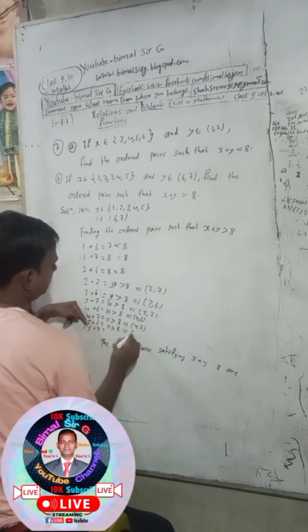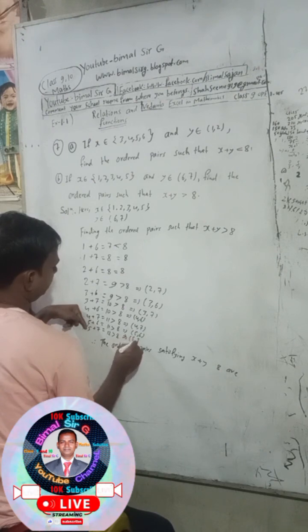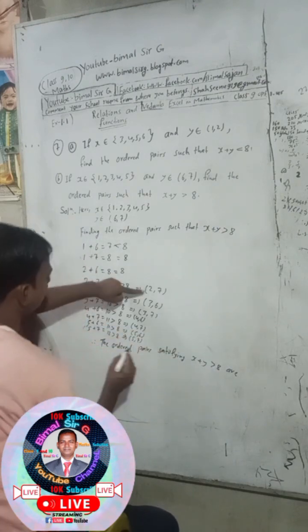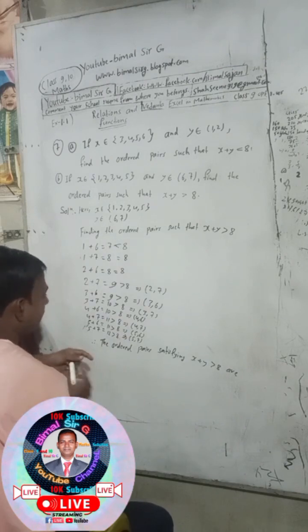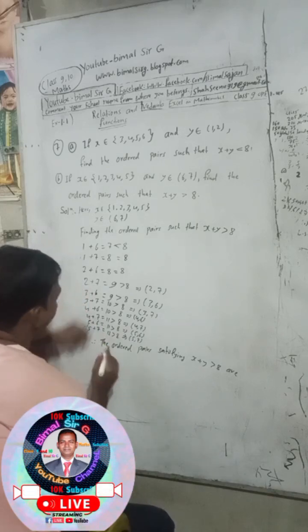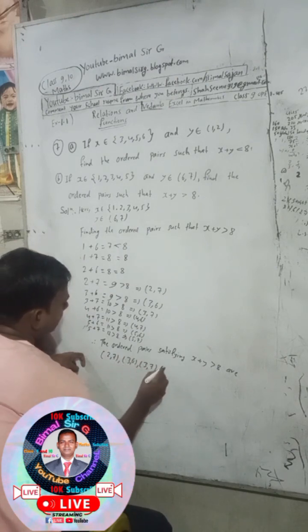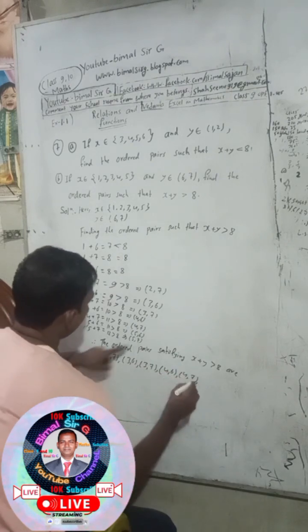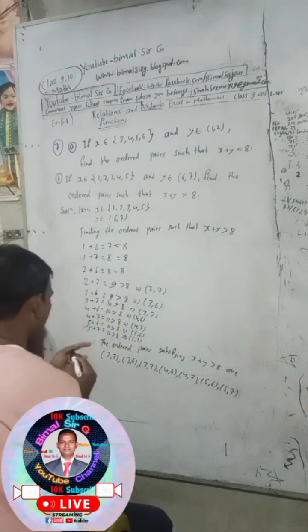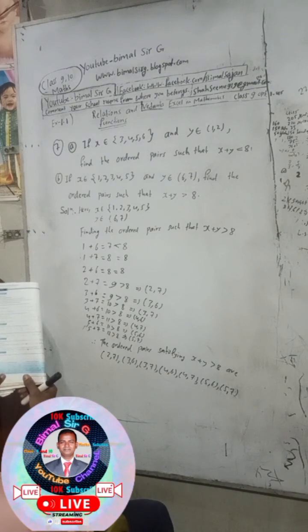Therefore, the ordered pairs satisfying x plus y greater than 8 are found by listing all valid combinations from the given sets.